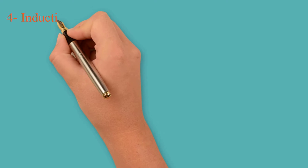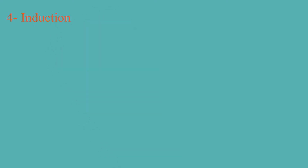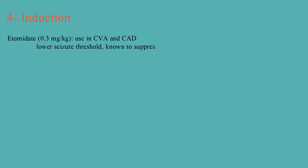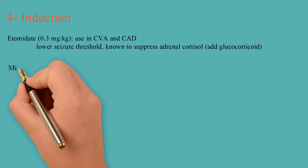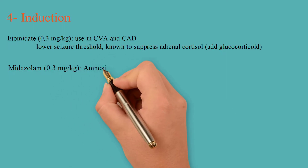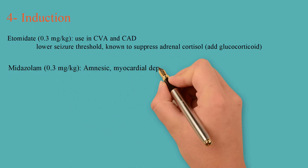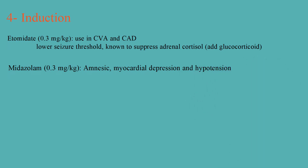Fourth step is induction. You can choose between four agents. First is etomidate, the preferred agent in stroke and coronary artery disease situations, but it can lower seizure threshold in those who have had seizures and is known to suppress adrenal cortisol, so consider adding a glucocorticoid. Our second agent is midazolam — it can cause amnesia, but can also cause hypotension through cardiac depression. The dose for both agents is the same: 0.3 mg per kg.